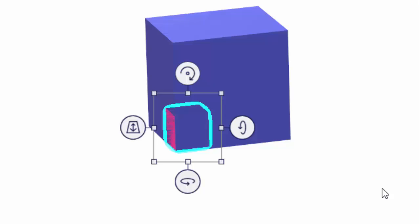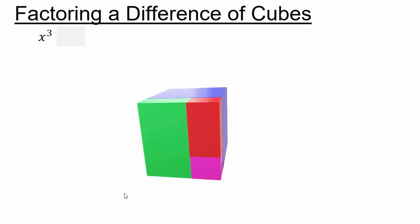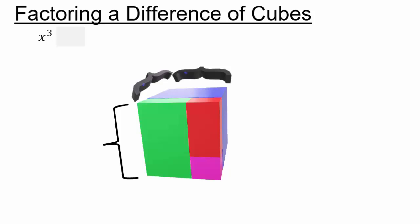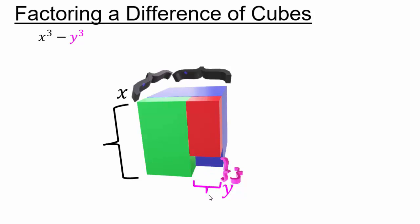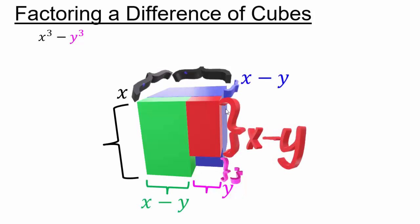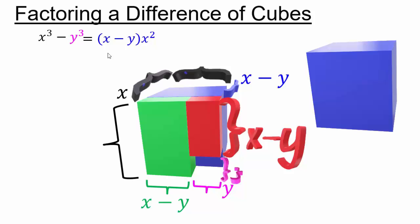I have to split it in certain ways so we can identify what each piece represents. Here we have x cubed, and we're going to break it into pieces so we can see how to remove a y cubed from it. Our original cube was x by x by x, and from it we're removing the little y cubed cube. So x cubed minus y cubed — let's remove it and see how it looks. From here to here is x minus y, here to here is x minus y, and from here to here is x minus y.